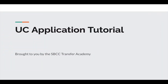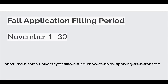Welcome everyone to the UC application tutorial brought to you by the Santa Barbara City College Transfer Academy. We're using a resource you can find online at https://admissions.universityofcalifornia.edu/how-to-apply/applying-as-a-transfer/. This website will give you lots of information about applying as a transfer student, and it's owned by the University of California, so all the information is reliable.